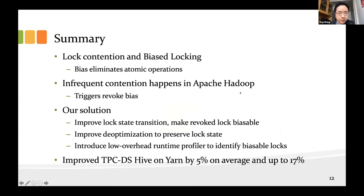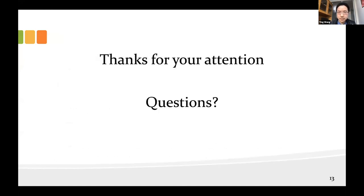To summarize: we looked into how bias locking helps eliminate atomic operations in phases where contention is rare. We also identified one case not addressed by bias locking — infrequent contention can make bias locking invalid. We took on the challenge to improve bias locking for this case. We introduced new state transitions, improved de-optimization to remove blockers, and used a low-overhead profiler to identify locks that can benefit. On average, we saw a 5% improvement on TPC-DS Hive running on Hadoop. That's my talk. Thank you for your attention.